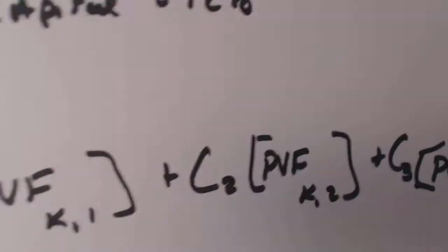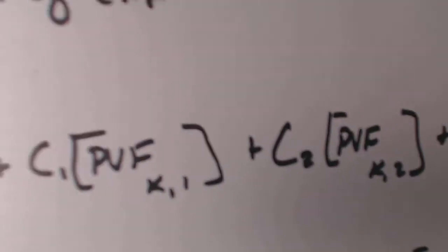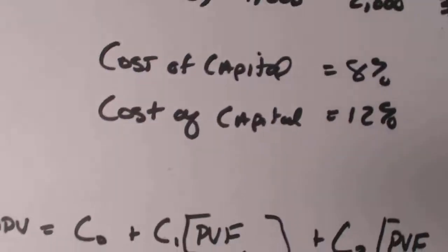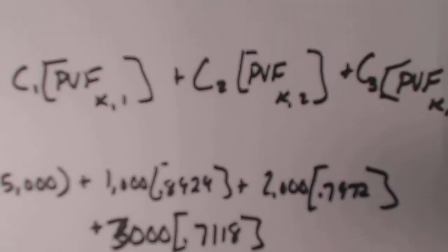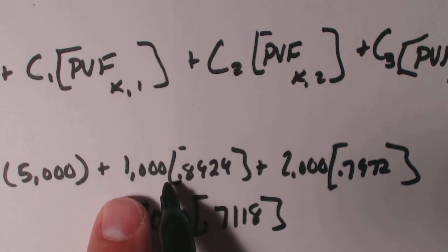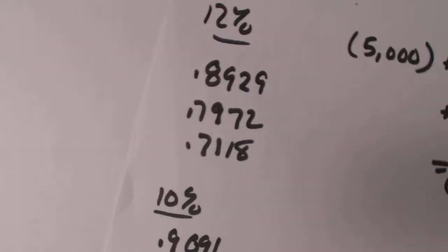was that we ran the equation and it looks similar to this. I actually put the numbers in. So $5,000. Now this is a 12%.